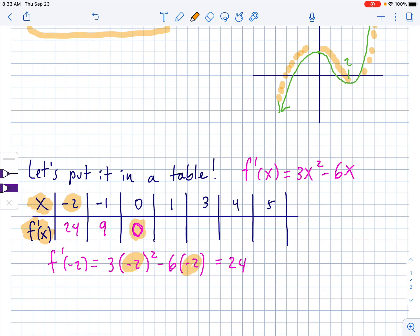Plug a 1 into this spot and this spot, and we get 3 minus 6, which is negative 3. Then plug a 3 in there, and we get 27 minus 18, which is, wait, no, I didn't do that right. Oh, no, I did it. 27 minus 18 is 9.